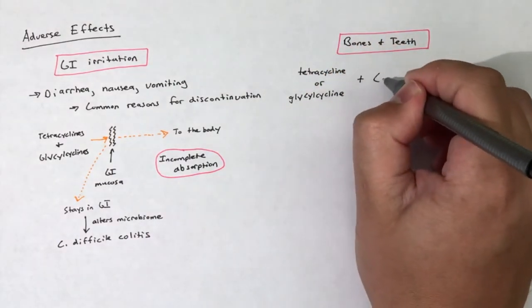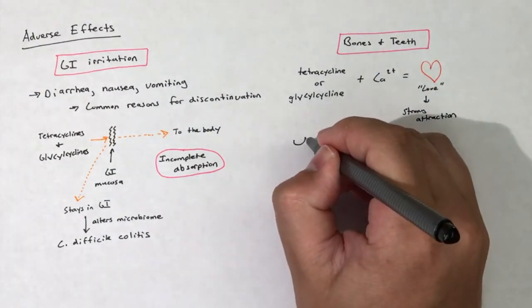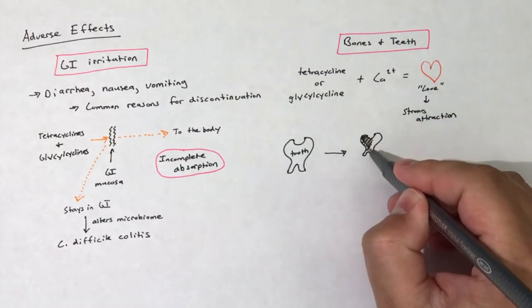Tetracyclines bind quite well to the calcium of newly developing bones and teeth. Children treated with tetracyclines or glycylcyclines have the potential to develop a permanent brown discoloration of the teeth.